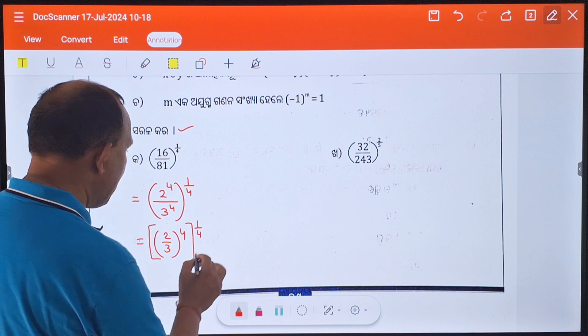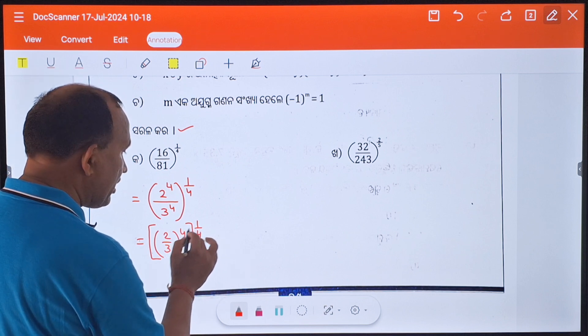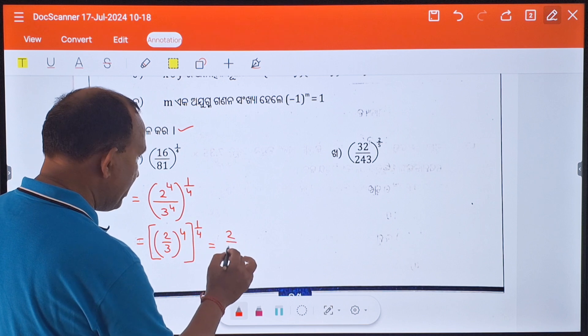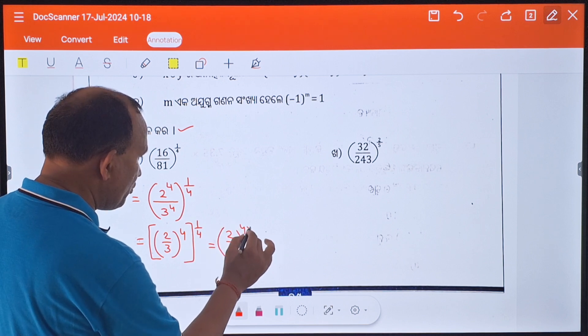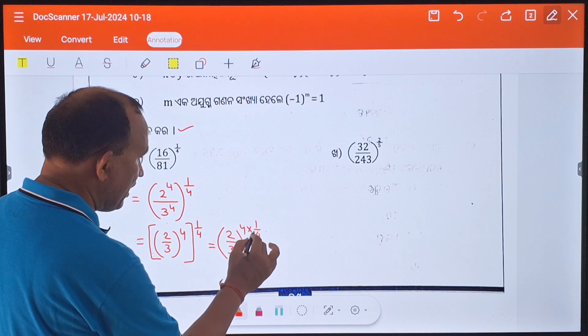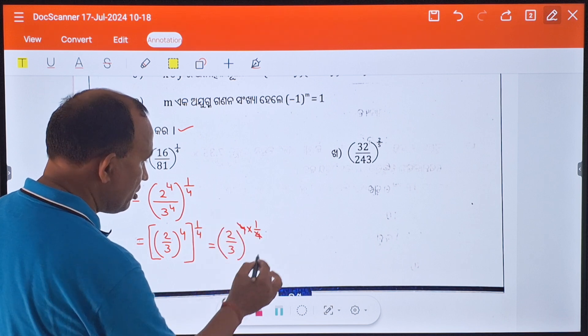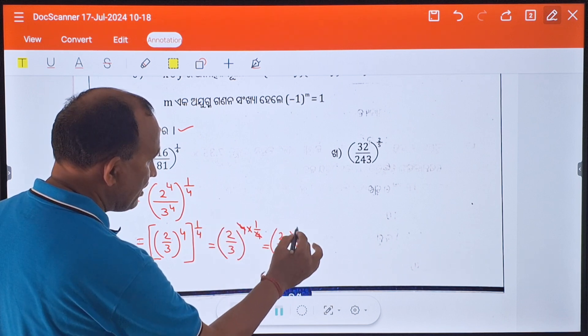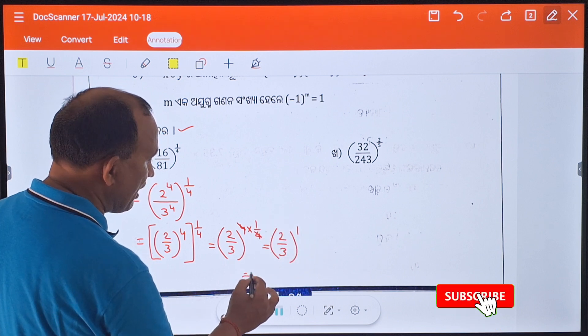That's how I write this. So 2 by 3 whole to the power of 4 into 1 by 4. So the same thing is 2 by 3 whole to the power of 1.